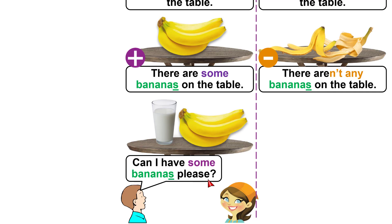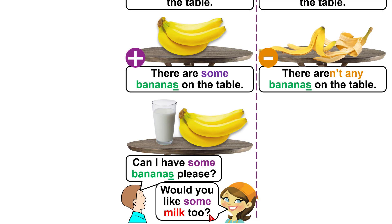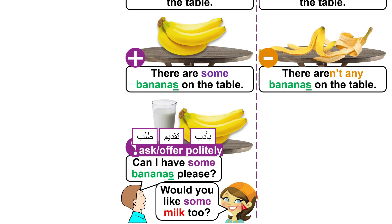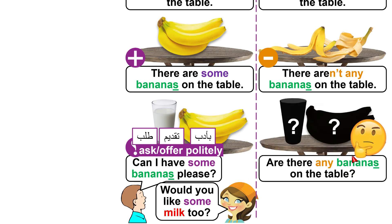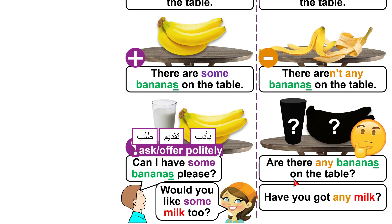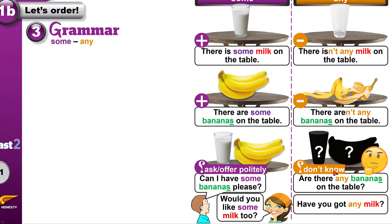What about questions? "Mom, can I have some bananas please?" "Would you like some milk too?" The boy is politely asking for bananas, and the mom is offering milk. Now: "Are there any bananas on the table?" "Have you got any milk?" "Is there any milk on the table?" These use "any" because the person doesn't know if it exists. The boy knows there are bananas and wants them — that's different. We use "any" when we don't know.